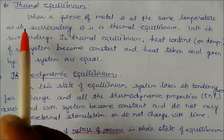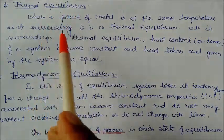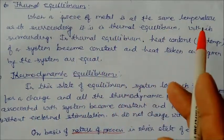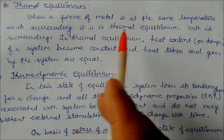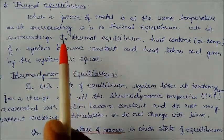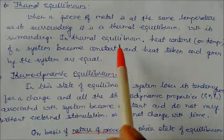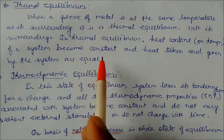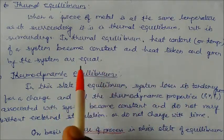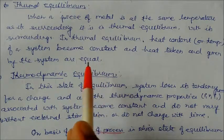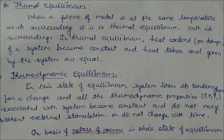The next equilibrium is thermal equilibrium. When a piece of metal is at the same temperature as its surroundings, it is in thermal equilibrium. In thermal equilibrium, the heat content or temperature of the system becomes constant, and the heat taken and given by the system are equal. So the system is giving and receiving the same amount of heat — both are equal. This stage is called thermal equilibrium.